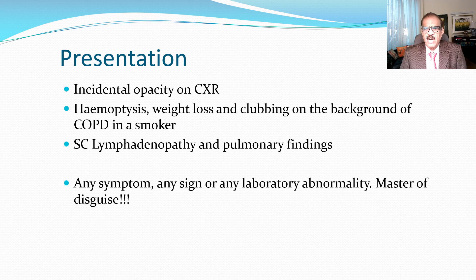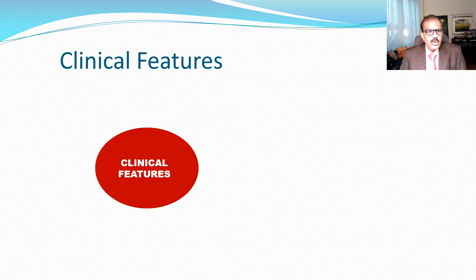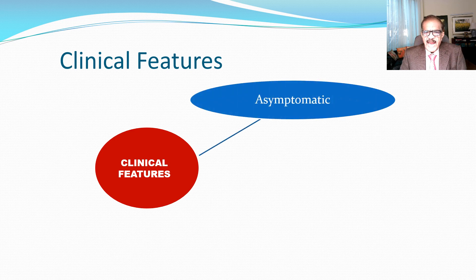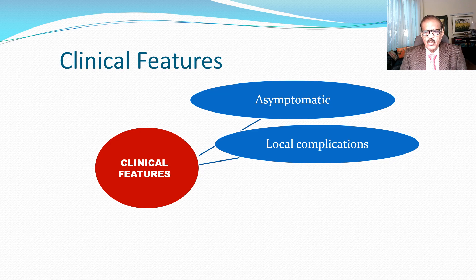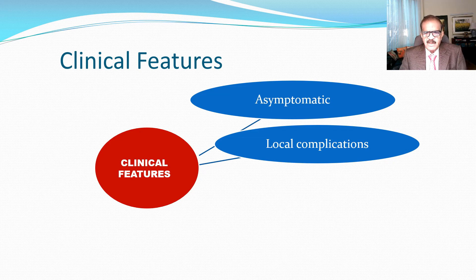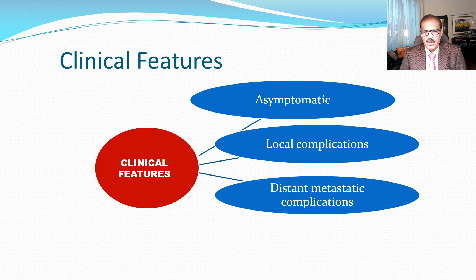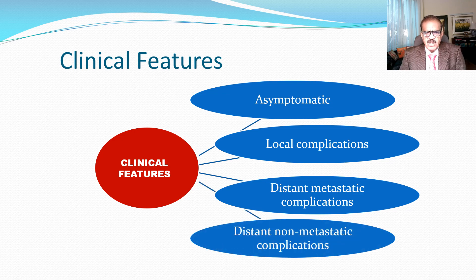That is why these patients come to physicians first. The clinical features are: first, asymptomatic; second, local complications — because once the tumor grows it causes bronchial narrowing, bronchial obstruction, infiltration into lung parenchyma, and neighboring structures like pericardium, blood vessels, other lungs, and esophagus; third, distant metastatic manifestations — symptoms from metastasis to brain and bone; and fourth, distant non-metastatic complications. I will give the detail of all these.